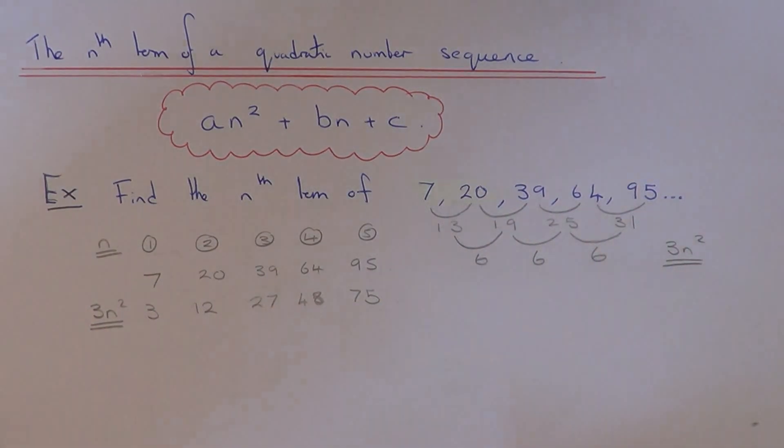So once I've done this I'm now going to take away the 3n² from the numbers in the sequence which we have. So I'm going to take these away.